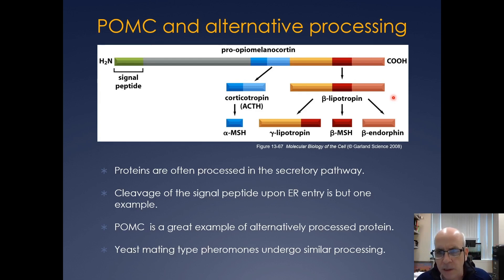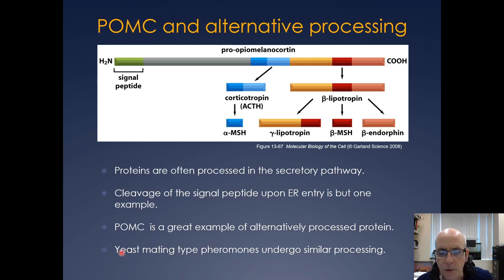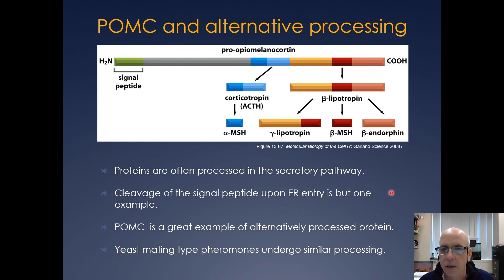These can oftentimes also acquire disulfide bonds before they're chopped up. Another protein this happens to is the yeast mating-type pheromone, which undergoes a very similar sort of processing as it's traveling through the secretory pathway.